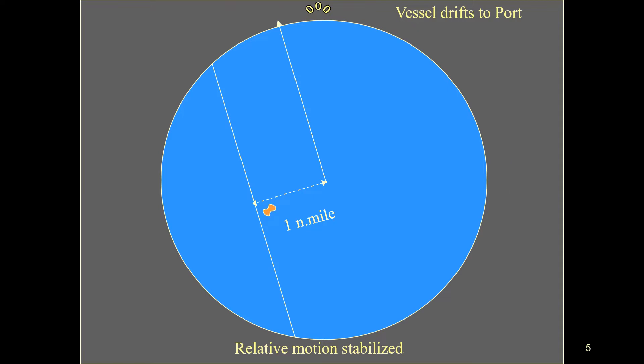If the bearing cursor is set parallel to this track, it will indicate the course to make good for own ship. Any displacement of the echo from the forecast track will indicate a departure from the desired course over the ground.